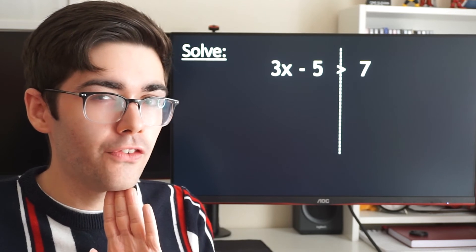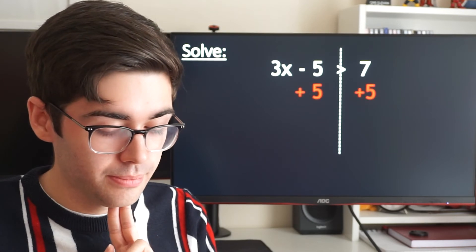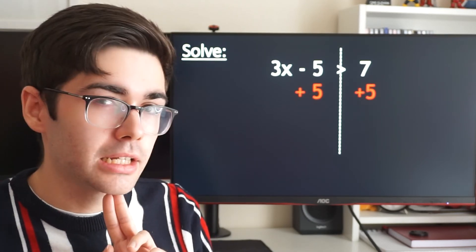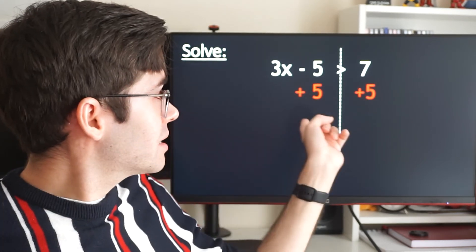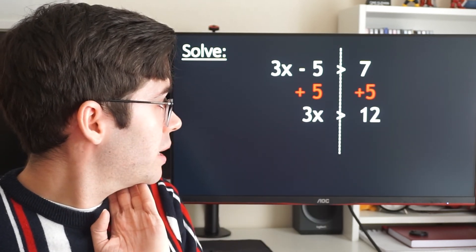What am I going to move first? I want to get rid of this minus five, so I'm going to add five to both sides. What will that give me? What's the next line? 3x, that symbol, and then 12. 3x is greater than 12.